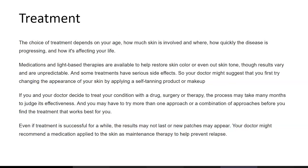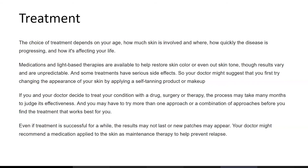Even if treatment is successful for a while, results may not last or new patches may appear. Your doctor might recommend a medication applied to the skin or maintenance therapy to help prevent relapse. No drug can stop the process of vitiligo — the loss of pigment cells — but some drugs, used alone, in combination, or with light therapy, can help restore some skin tone.